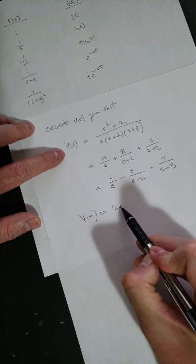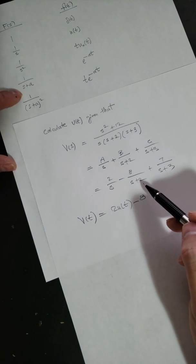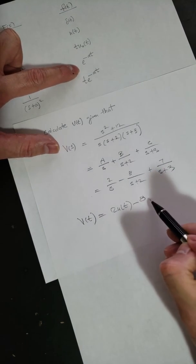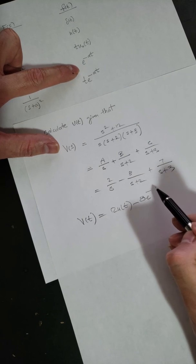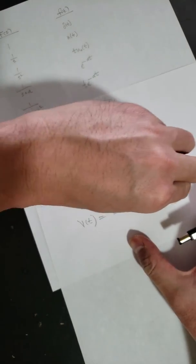So this V(s), so now it's become V(t) in the time domain. So here you have 2u(t) minus 8. You look at the chart, looks kind of like that, right? So you copy this down: e to the minus, what is a? A here is 2, so 2t.